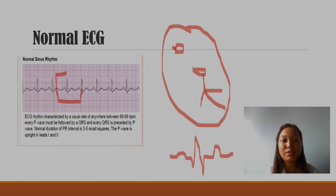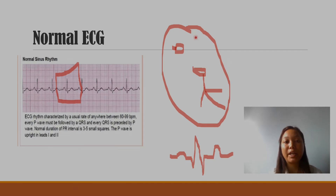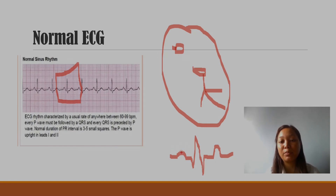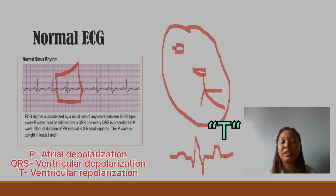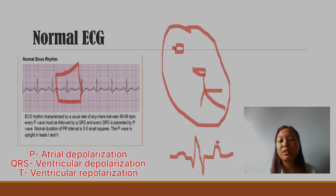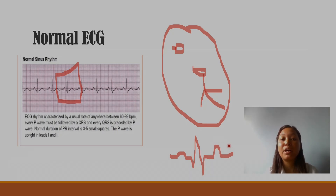Just look into this part. This is your P, Q, R, S, T. This is the normal ECG pattern. In normal ECG, when the atrium is contracted, it is a P wave. This is the ventricular contraction — the Q, R, S wave. This is the ventricular repolarization — the T wave. This is the normal pattern.